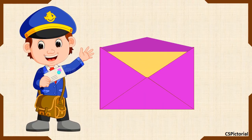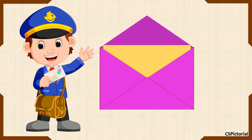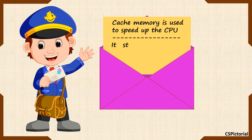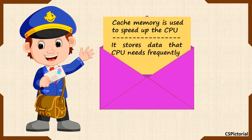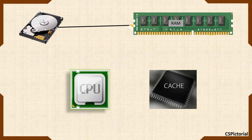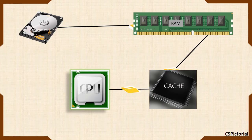To further speed up the CPU, the cache memory comes into the scene. The cache memory stores the data that the CPU needs frequently. Here is how the data flows: the data moves from the hard disk to RAM, and the frequently used data is then stored in cache, from where the CPU retrieves the data at a much faster speed.